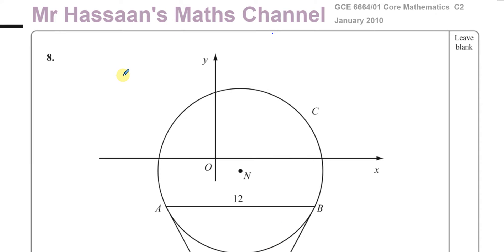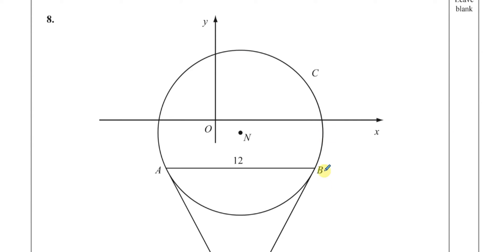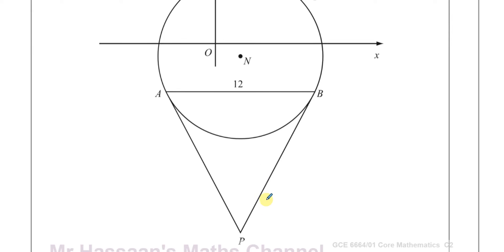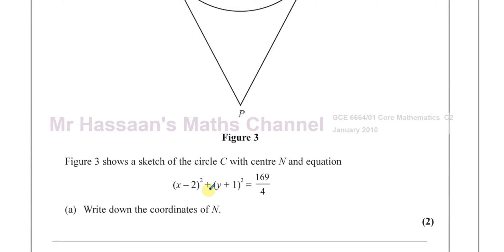Welcome back. This is Mr. Hassan's Maths Channel, and this is question number 8 from the January 2010 GCE A-level C2 paper, which is relevant to the new P2 syllabus. This question is about the equation of circles. We have been given a diagram of a circle, a pair of axes, and a triangle. Figure 3 shows a sketch of the circle C with center N and equation (x−2)² + (y−1)² = 169/4. Write down the coordinates of N.